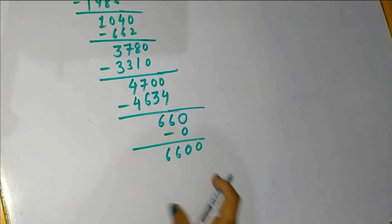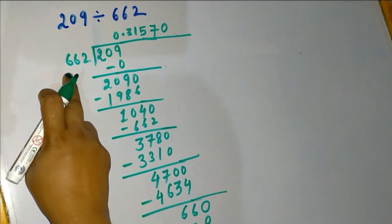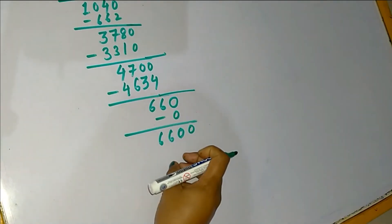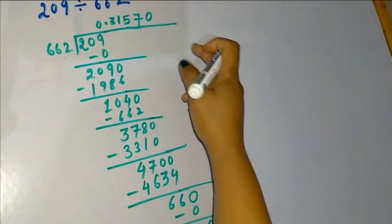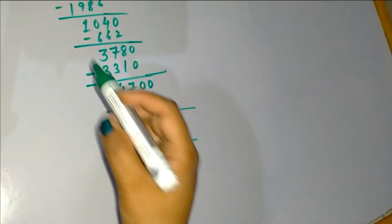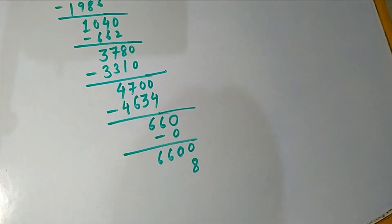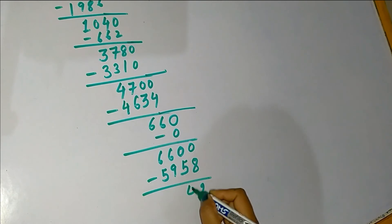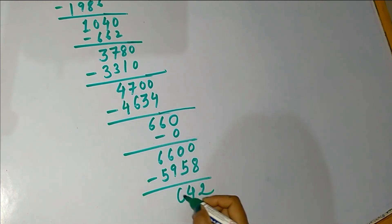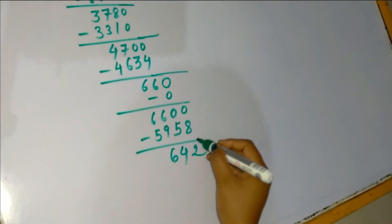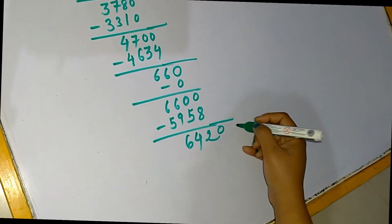Now we have 6600. Here, 10 times 662 would be 6620, which is greater than 6600, and we normally don't apply a 10-times term in the quotient. So we go for 9 times 662: 9 × 2 is 18, carry 1; 9 × 6 is 54, plus 1 is 55, carry 5; 9 × 6 is 54, plus 5 is 59. Subtracting: 10 − 8 is 2, 9 − 5 is 4, 15 − 9 is 6, remainder 0. Due to the decimal point, we can put one zero, giving 6420. There is an endless solution to this question — we have already solved up to 6 decimal places.